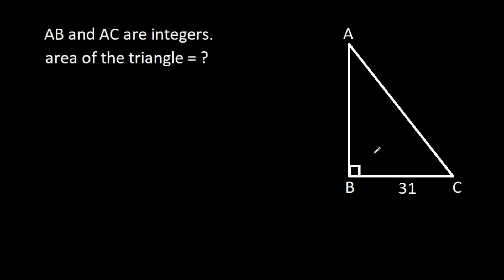In this video, we have been given a right angle triangle ABC in which BC is 31. AB and AC are integers. We have to find the area of the triangle.